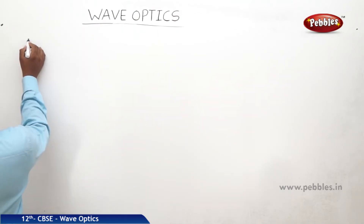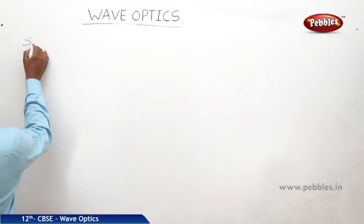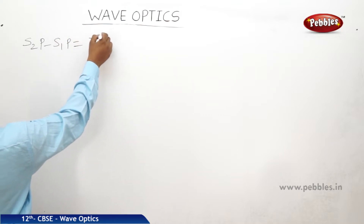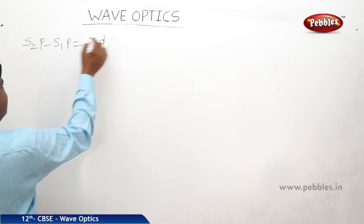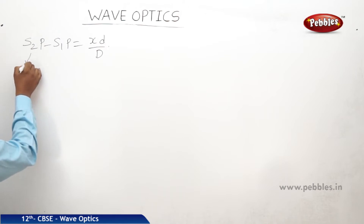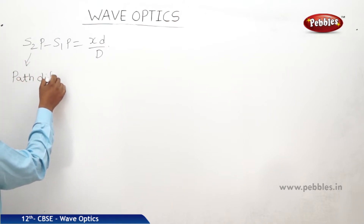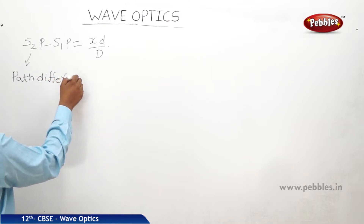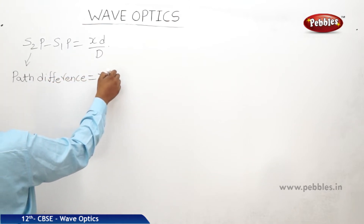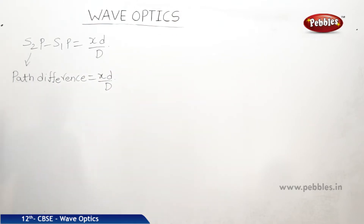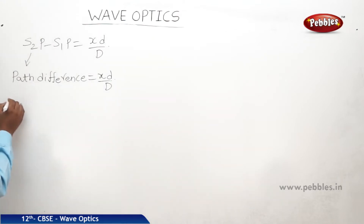We have s2p minus s1p is equal to xd by D. Therefore s2p minus s1p is called path difference and is equal to xd by D. Now we will see the path difference for constructive interference and destructive interference.